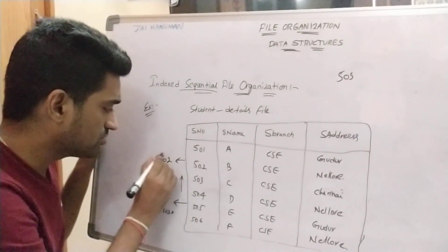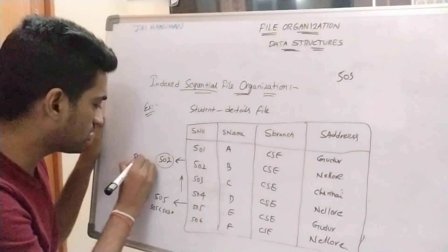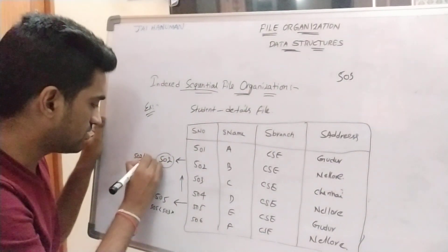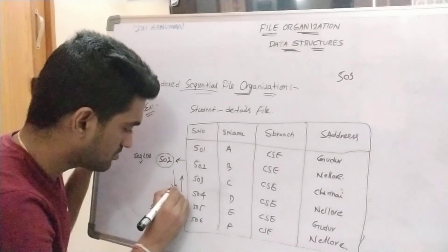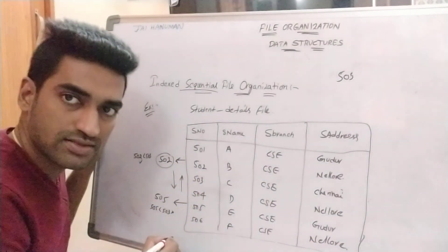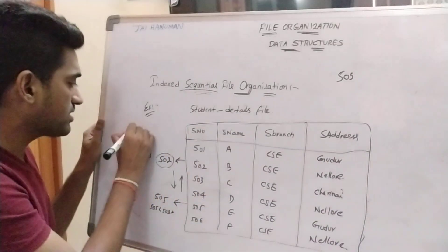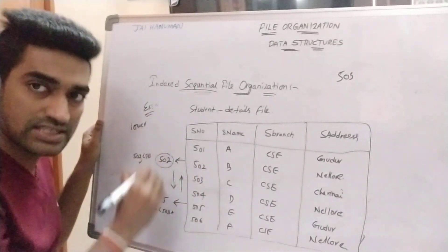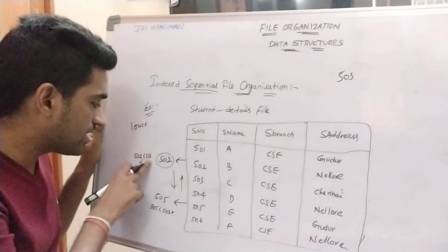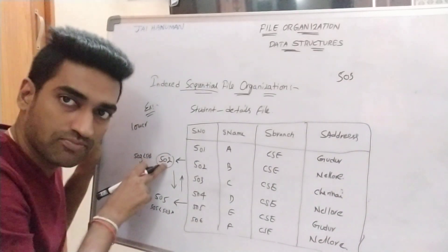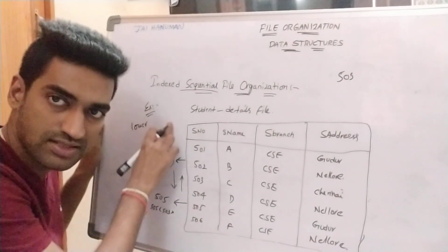Now apply the comparison process in between the lower index: 502 less than 503 — condition is true. So when condition is true, we can search the right sublist. So clearly we are observing one thing: when compared to the lower index value, our record value is greater — we can search the right sublist; otherwise we can search the left sublist.